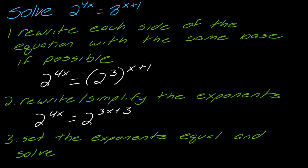So in this case, I've got 4x equals 3x plus 3. You would just solve for x as usual. I'm going to omit the work here, but you would subtract 3x from each side, and ultimately you would get x equals 3. And so that would be your solution.